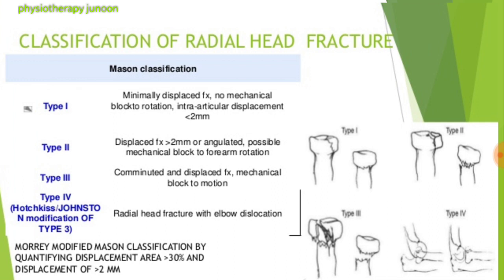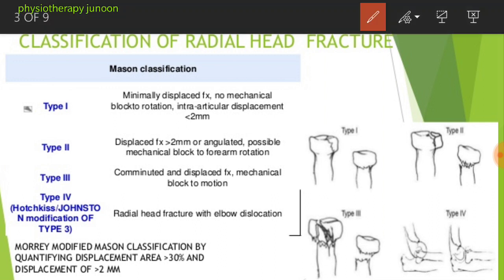Type 1 is a non-displaced fracture, often missed on radiograph, with a positive posterior fat pad sign. Type 2 is a marginal radial head fracture with displacement. In Type 1 there is no displacement and it may not be found on radiograph, but in Type 2 there is displacement and depression or angulation. Always compare the differences between these two types.